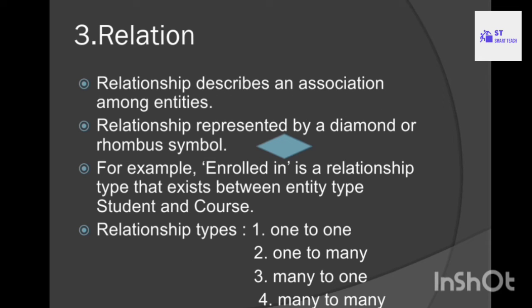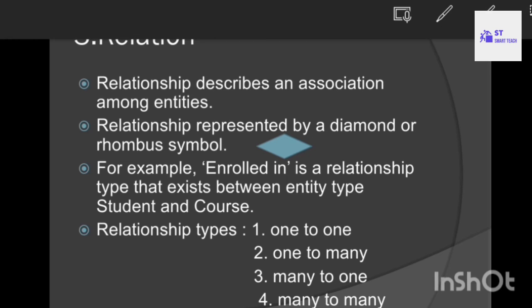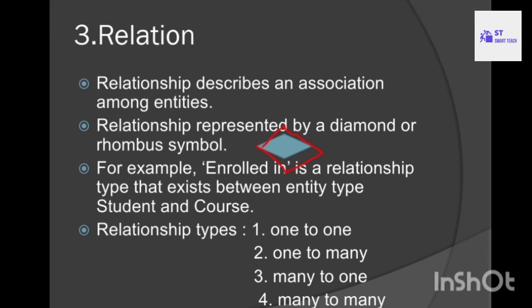The next one is relationship. A relationship describes an association among entities. For example, enrolled is a relationship between two entities. In an ER diagram, a relationship is represented by using a rhombus symbol or diamond symbol.